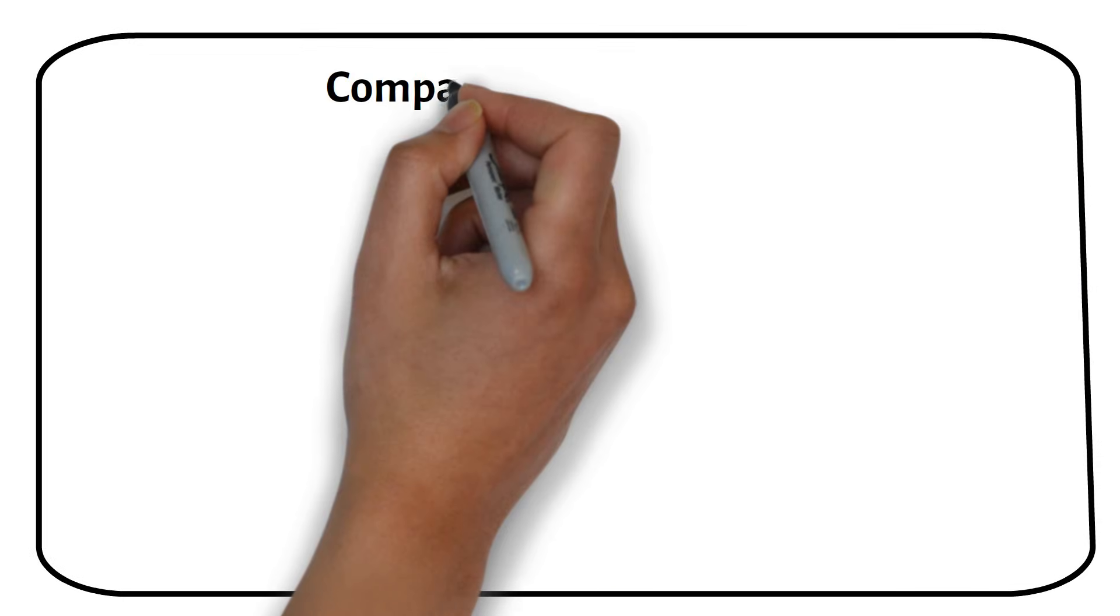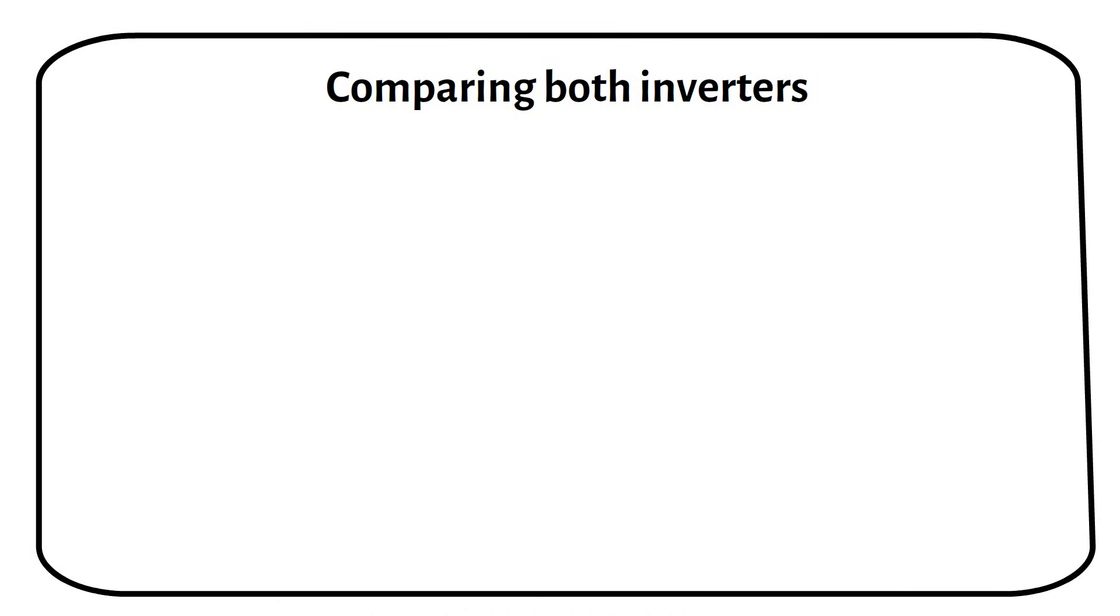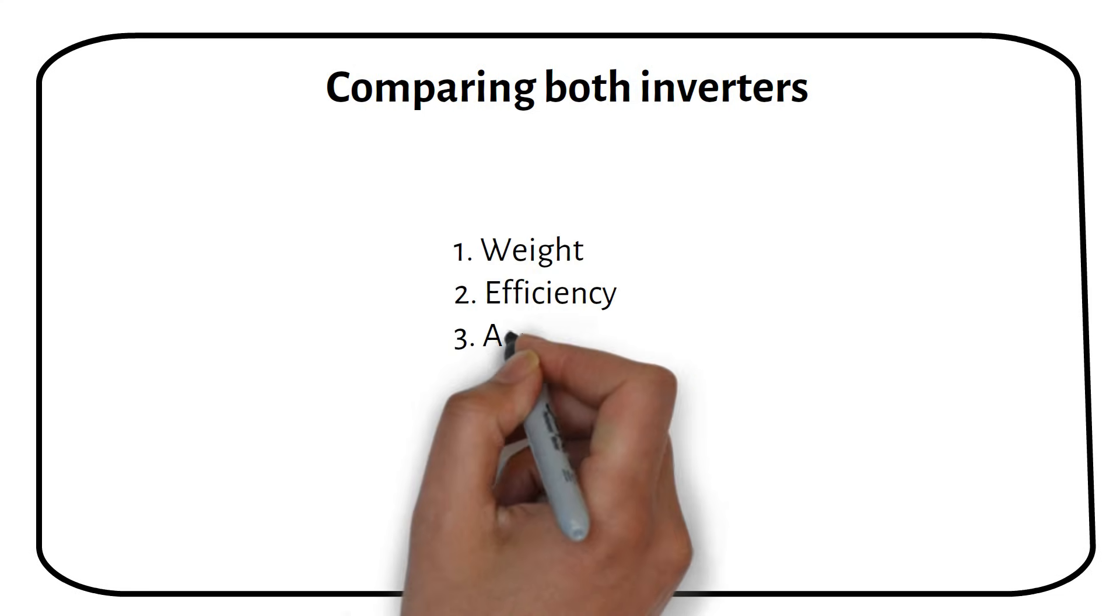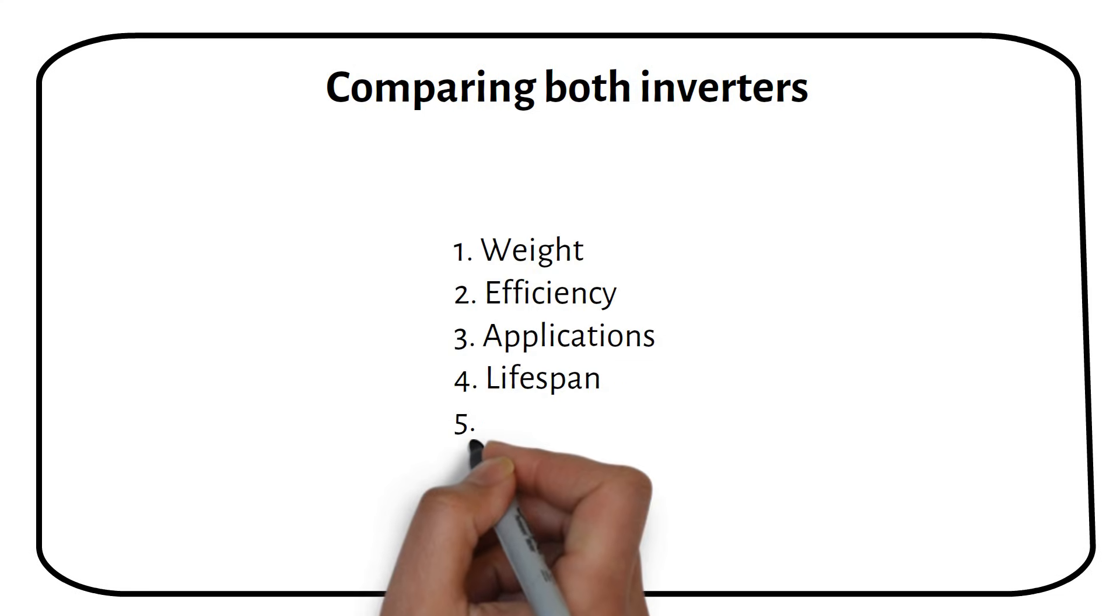When comparing both inverters, we can categorize them according to five criteria. These are weight, efficiency, applications, lifespan and price.